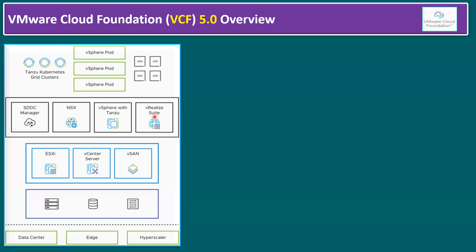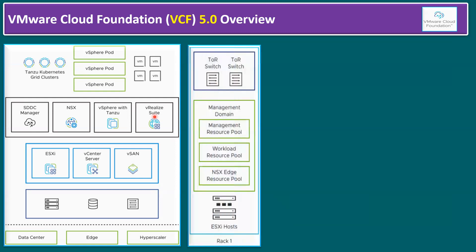VCF has two types of architecture. The first is consolidated architecture, where within one rack we have ESXi hosts. Minimally, to configure consolidated architecture we can use four ESXi hosts, and this architecture is generally recommended for small customer infrastructure size environments. Within consolidated architecture, we configure a management domain and management resource pool, workload resource pool — all within a single vCenter with two different resource pools dedicated for management VMs and workload enterprise applications. NSX edge resource pool covers a shared resource pool.